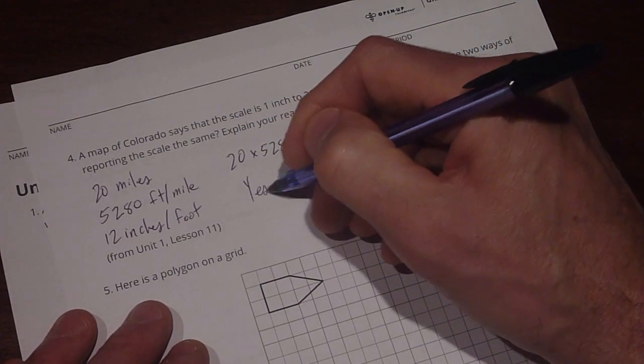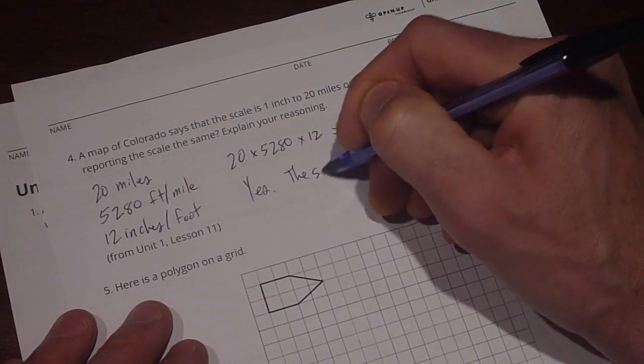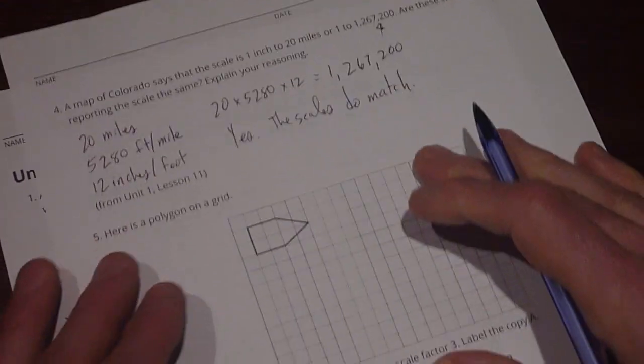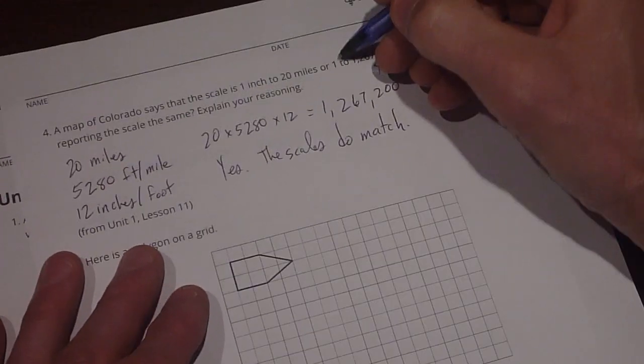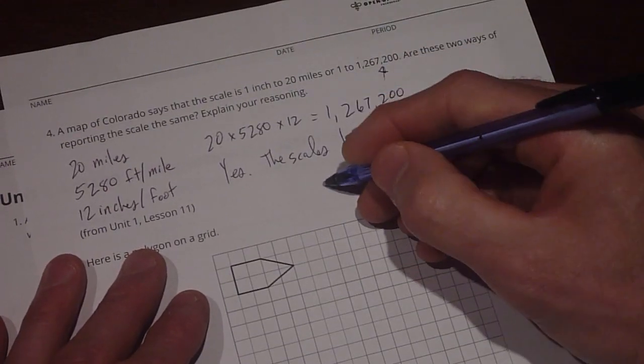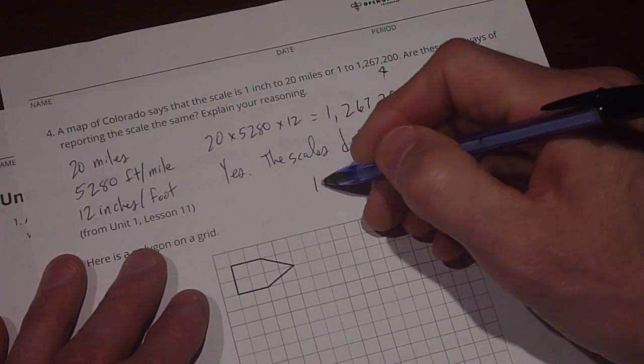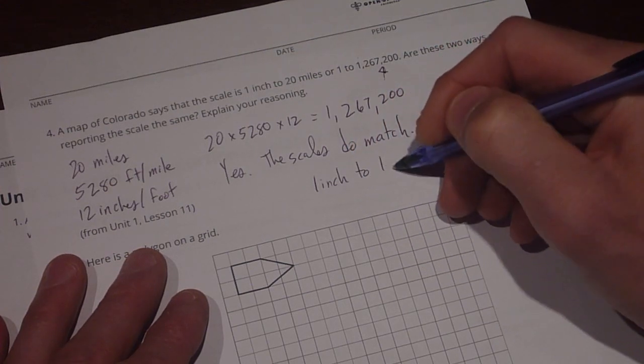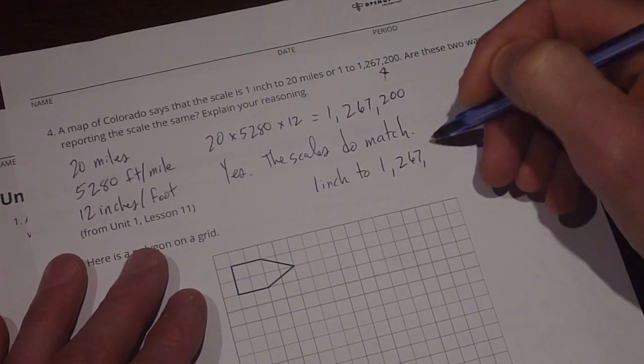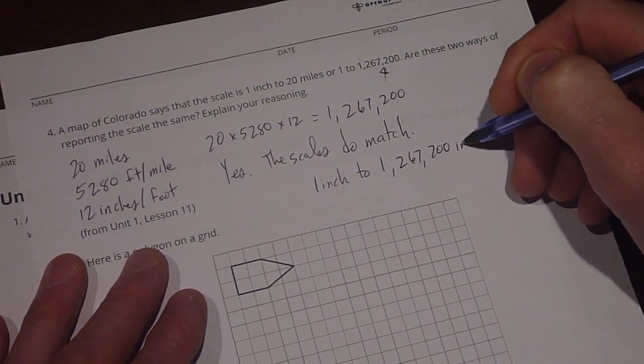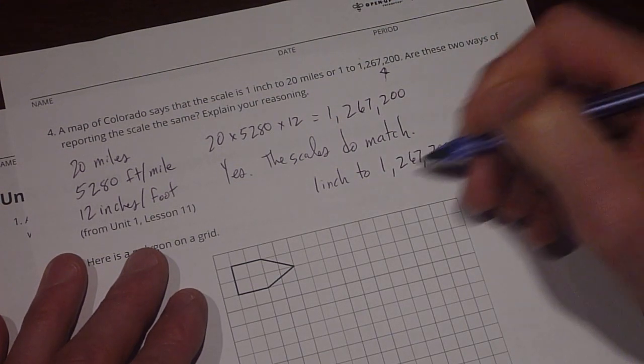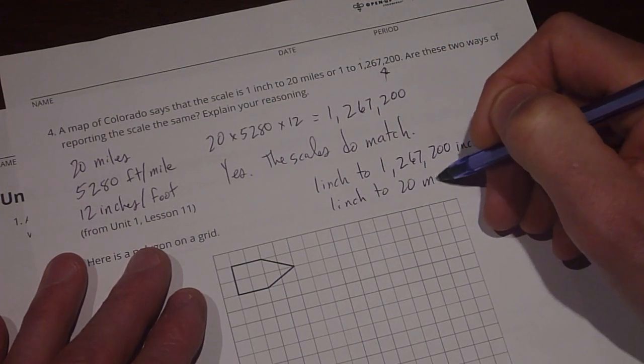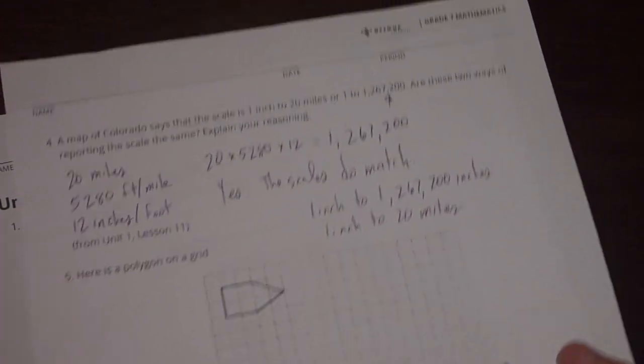So the answer is yes. The scales do match. If I wanted to be more specific, I could look at my second scale right up here and say this is 1 inch to 1,267,200 inches, which is equal to 1 inch to 20 miles.